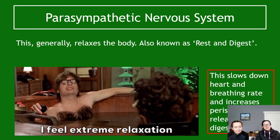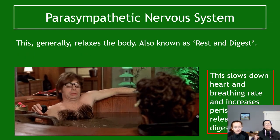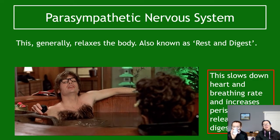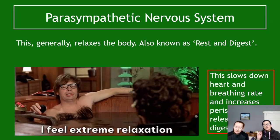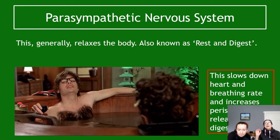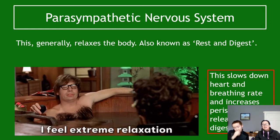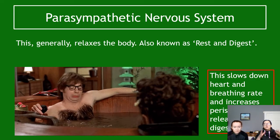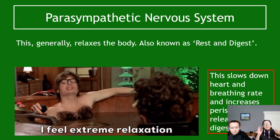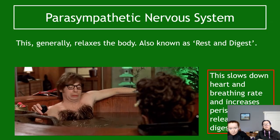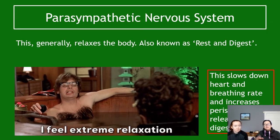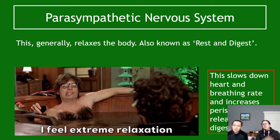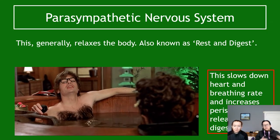The parasympathetic nervous system is known as 'rest and digest' — don't use that term in exams. Generally it relaxes the body. The key exam facts are: it slows down your heart and breathing rate, and increases peristalsis and the release of digestive juices. These are the opposite functions to the sympathetic nervous system, and you need to be able to state these effects precisely in an exam.